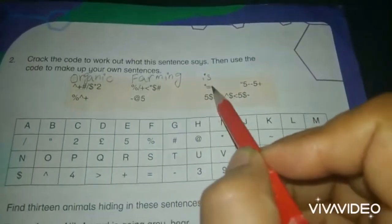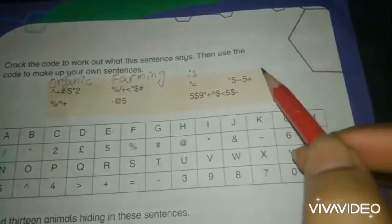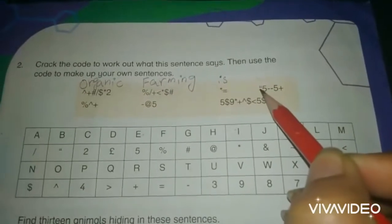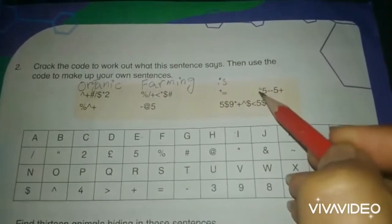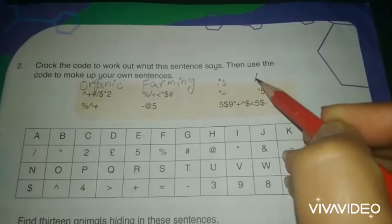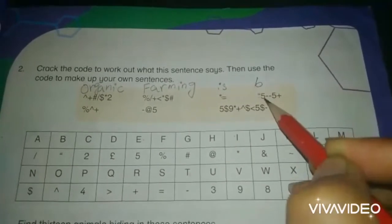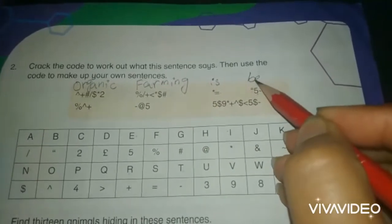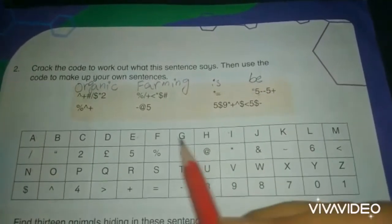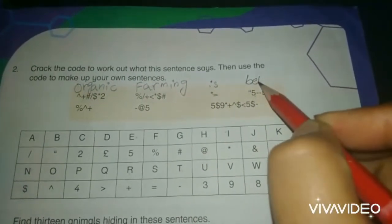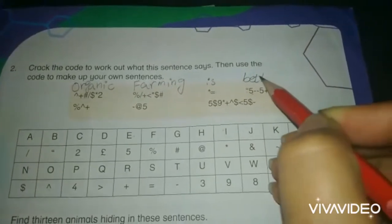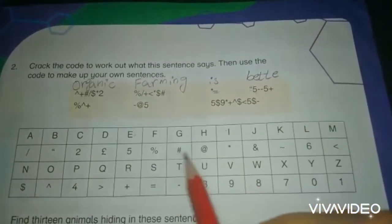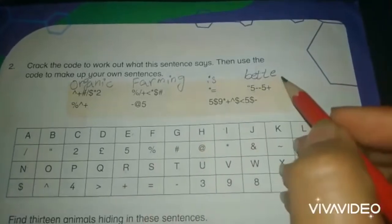The next symbol has alphabet B, and 5 represents E. Double T, E, next R. Better.